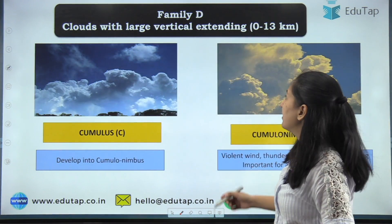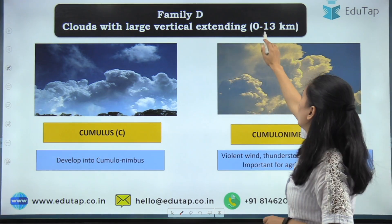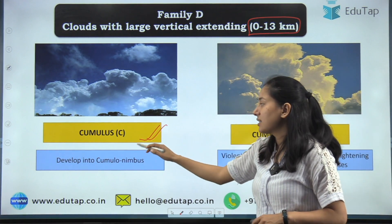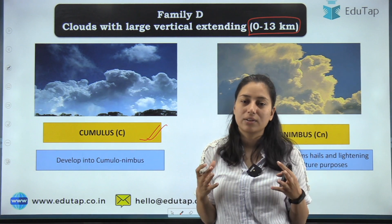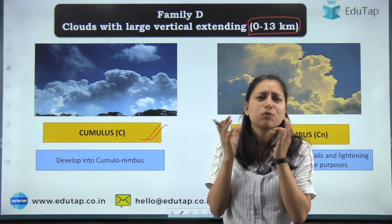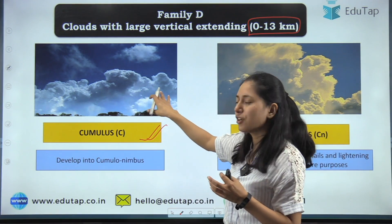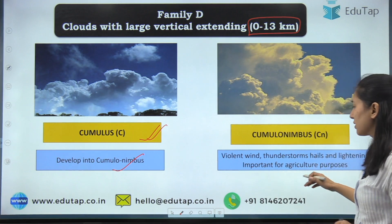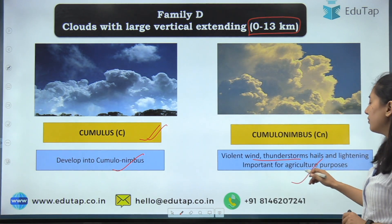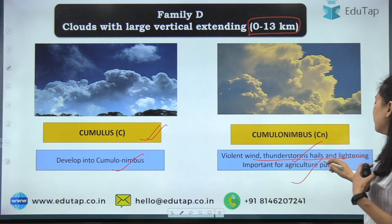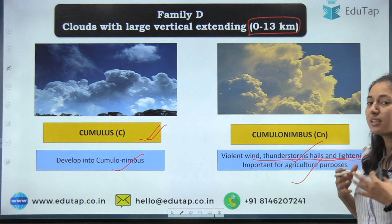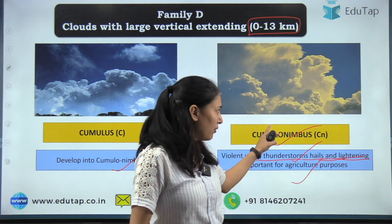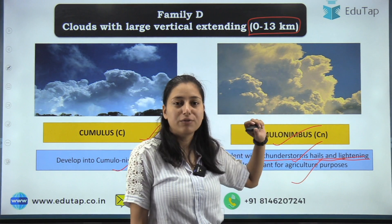Now Family D — large vertically extending clouds, altitude 0 to 13 kilometers. We have two types. First, cumulus: these look like a cauliflower. They further develop into cumulonimbus. Cumulonimbus are associated with violent winds, thunderstorms, hail, and lightning. They are important for agriculture because they are responsible for rain.